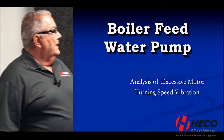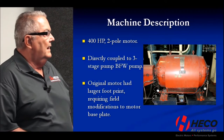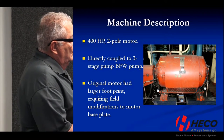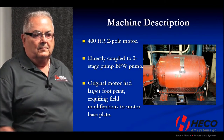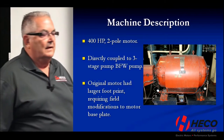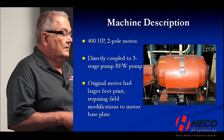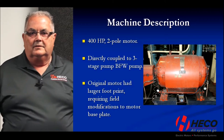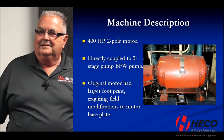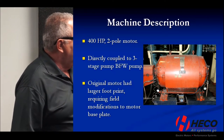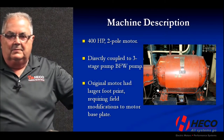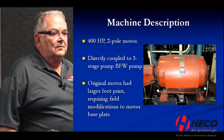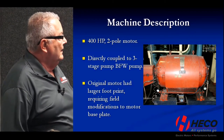Next we're going to look at a boiler feed water pump that had excessive vibration at its turning speed. It's a much smaller pump — the motor is coupled directly to the boiler feed water pump. It's a two-pole motor running nominally at 3,600 RPM. This is a new installation of a used motor. The previous motor had a problem, they didn't have a spare, so they went out and bought a used motor. It had a larger footprint — the span between the anchor bolts was longer — so they had to do some modifications to the base plate in order to install this motor.